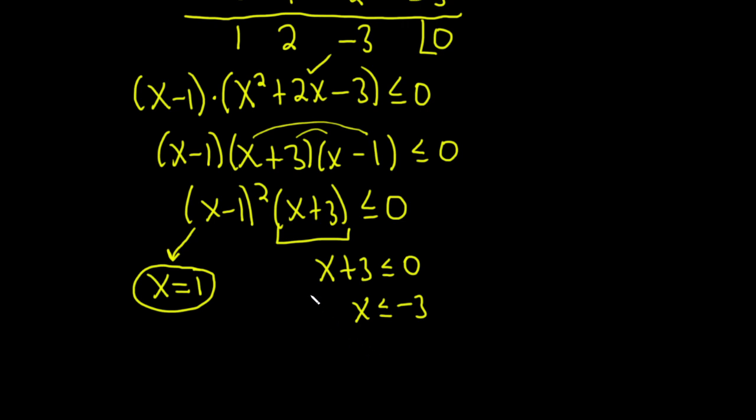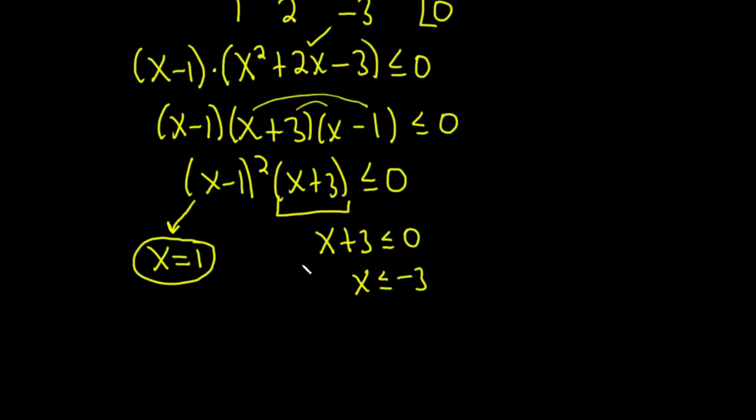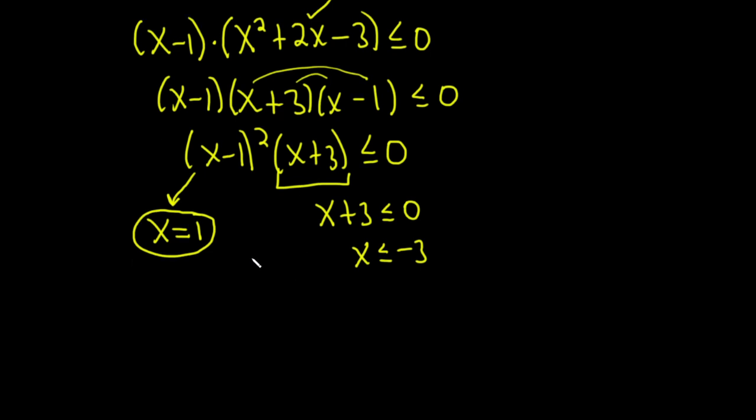So from here, we can get the answer, right? So we would get, in this case, negative infinity to negative 3, bracket, union, and a 1. And that would be the final answer.